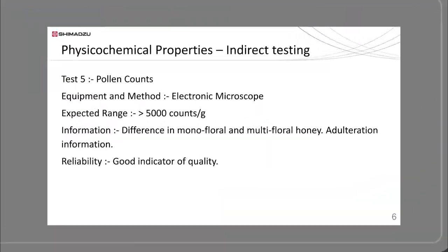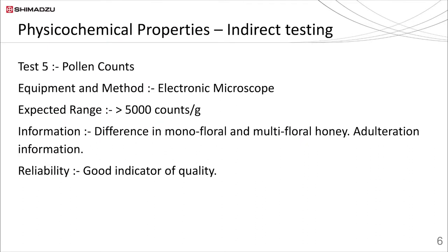Honey bees carry pollen along with them when they collect nectar from flowers, so the presence of pollen can give a better idea about authenticity and the botanical source of origin. When honey is adulterated or artificially processed, it loses its physical nature and pollen counts decrease. FSSAI has set a lower limit for pollen count of 5,000 counts per gram of honey. If honey contains more than 45% of a single type of pollen, it can be classified as unifloral honey. This test requires a simple laboratory microscope.